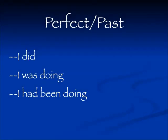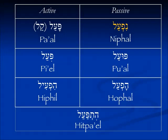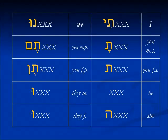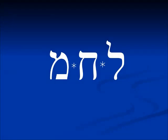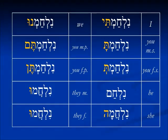Working in the perfect or the past tense, this will mean a finished action: I did, I was doing, I had been doing. Today we're going to work with the nifal binyam. Remember that in all the perfect tenses the endings are always the same regardless of the binyam. The nifal perfect tense always starts with the nun and it will have all the standard endings.